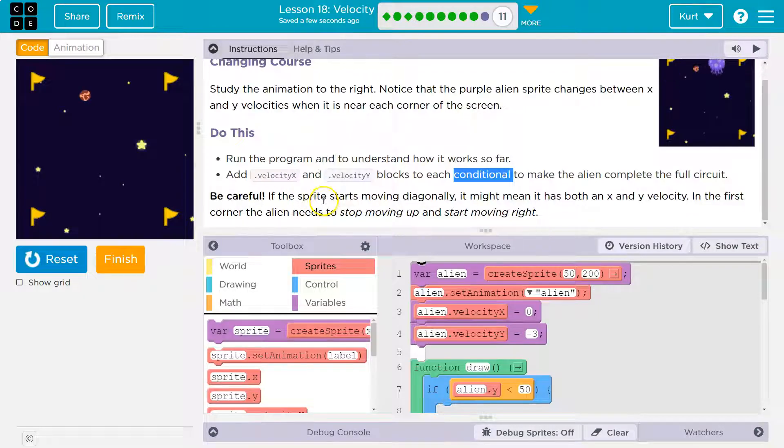Be careful. If the sprite starts moving diagonally, it might mean it has both an X and a Y velocity.